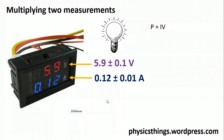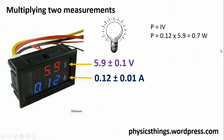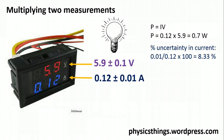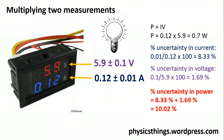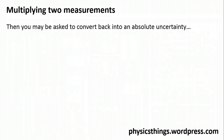Power equals current times voltage, so multiplying those together gives a value of 0.7 W. To get the uncertainty when multiplying, you take the percentage uncertainty of each value and add them together. The percentage uncertainty in our current was 8.33% and in our voltage 1.69%. Adding them together gives an overall uncertainty in power of 10.02%.